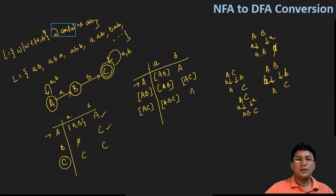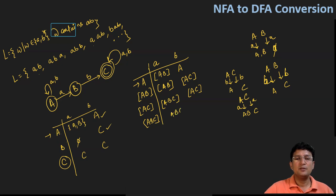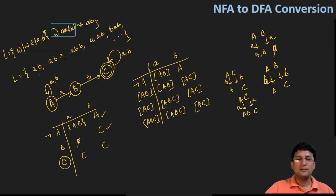A new state ABC has appeared, so I'll show its transitions. ABC on symbol 'a': A goes to AB, B goes to phi, and C goes to C — the union gives ABC. ABC on symbol 'b': A goes to A, B goes to C, and C goes to C — the union gives AC. No new states have appeared in this row, so the DFA transition table is now complete.